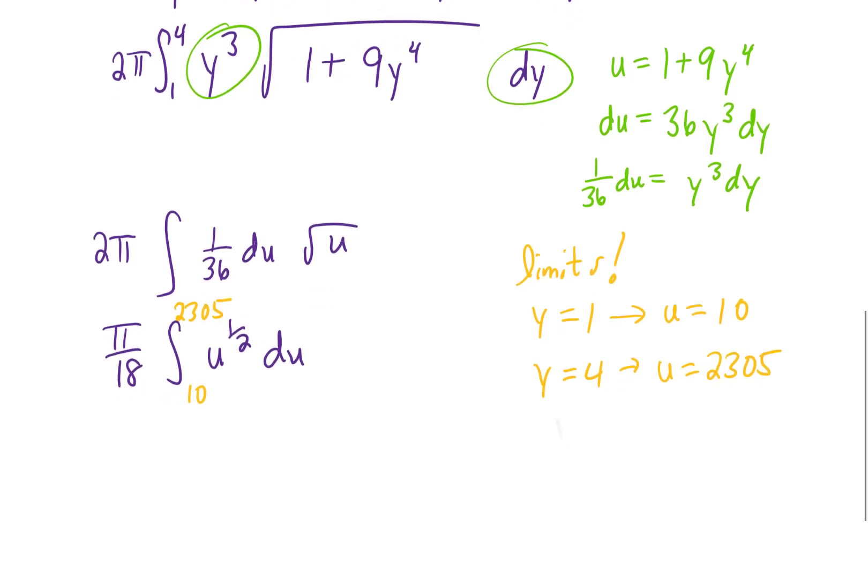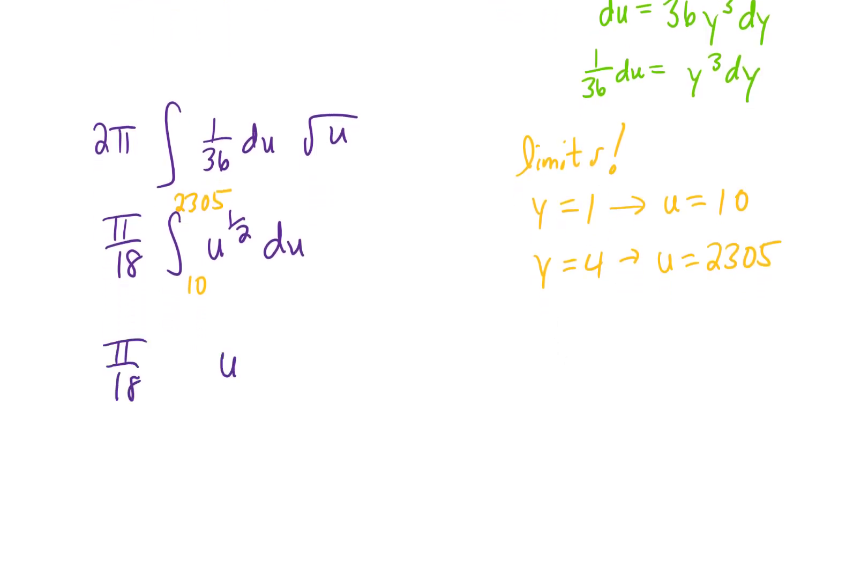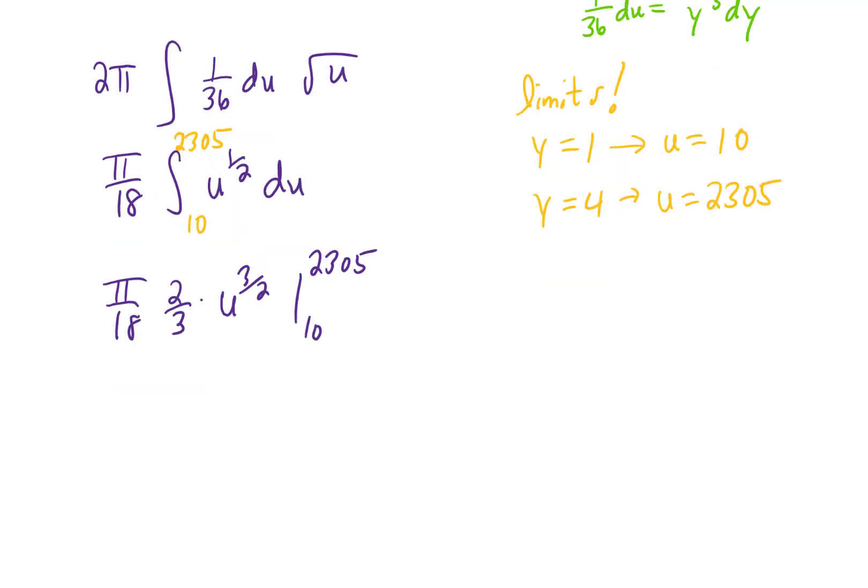Now, let's actually integrate. Adding 1 to the power of u and dividing by that power is going to be the same thing as multiplying by 2 thirds, and now we can simplify that 2 with the 18. That would leave us with pi over 9, but then multiplying that by 3 would give us pi over 27. And we can plug in the upper and lower limits of integration, and that is a pretty ugly answer.